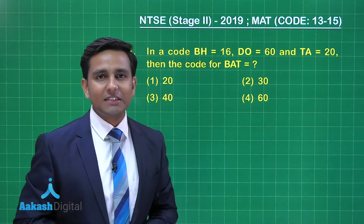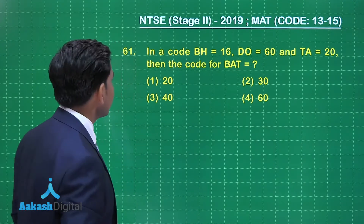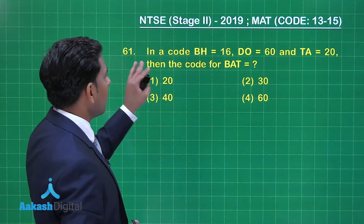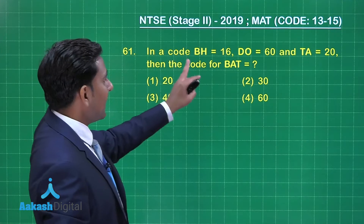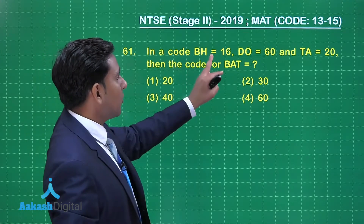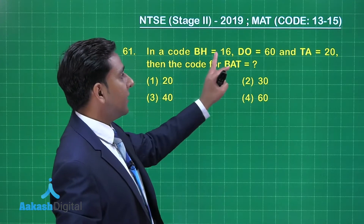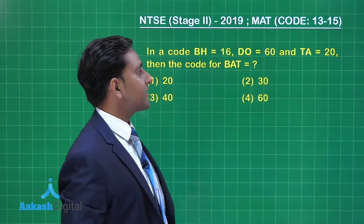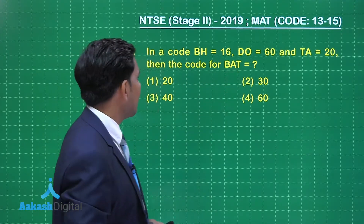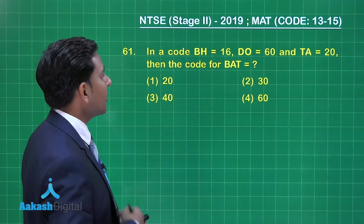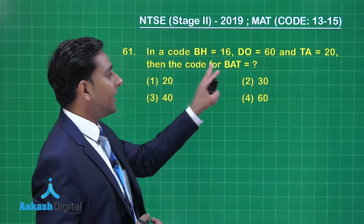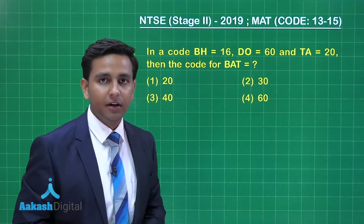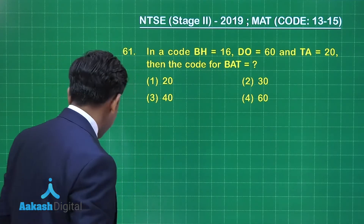It's time to solve question number 61. This question states: in a code, BH is equal to 16, DO is equal to 60, TA is equal to 20. Then what is the code for BAT? Let's solve this question.